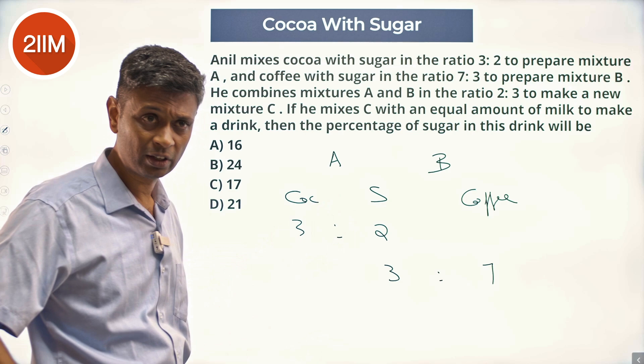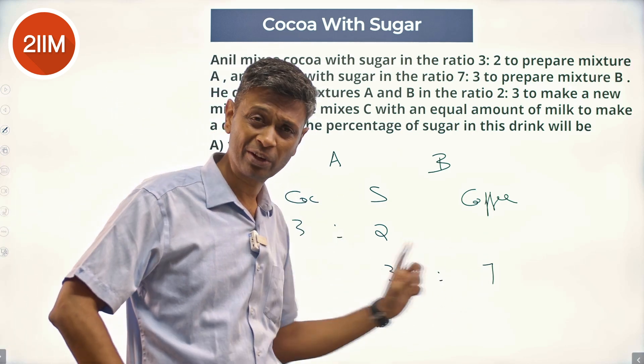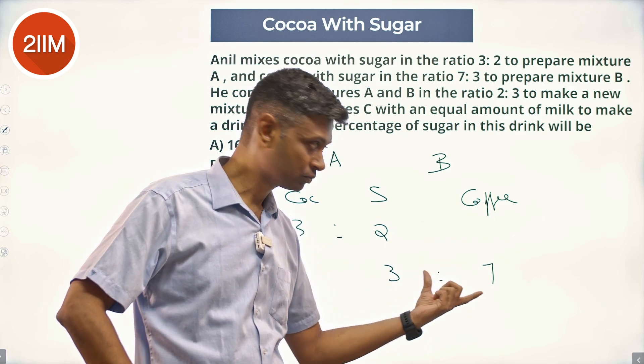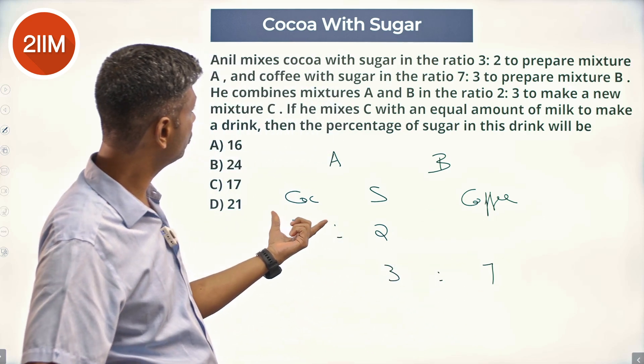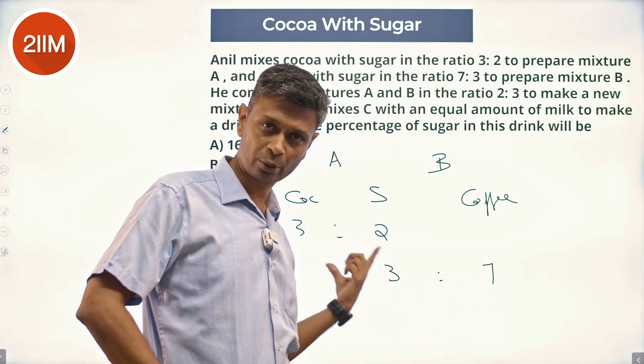So 3 plus 2 is 5. 3 plus 7, sorry, 3 plus 2 is 5, 3 plus 7 is 10. It should be a multiple of 3, and this should be in the ratio 3:2 totally. I can go for 30 and 20.